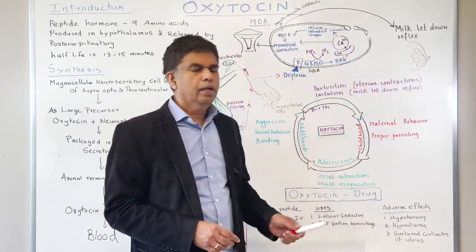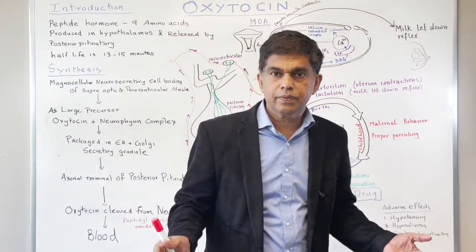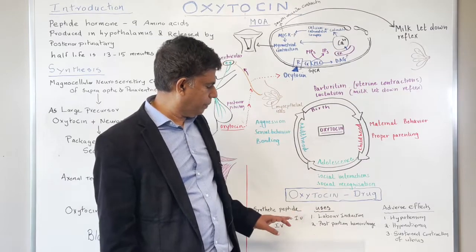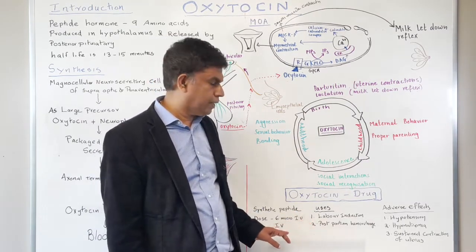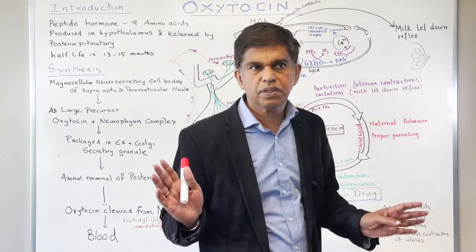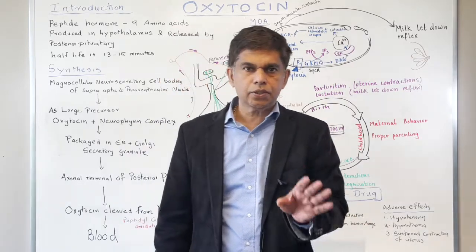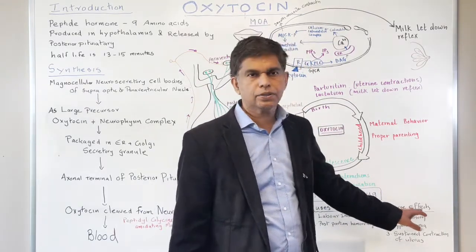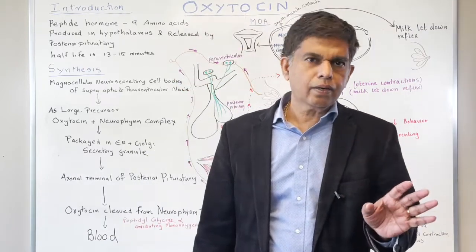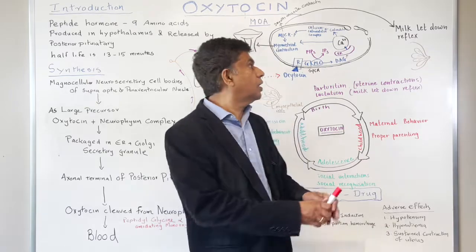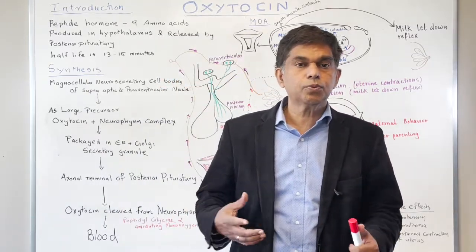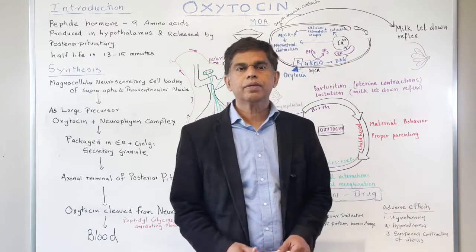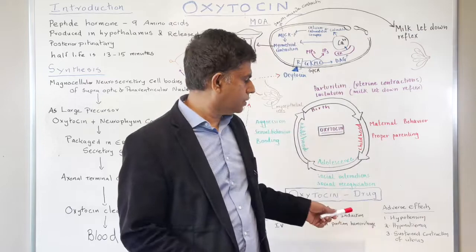We also use oxytocin as a drug in delivery. There is a synthetic oxytocin — a synthetic peptide — with a dose of 6 micro international units and a half-life of 13 to 15 minutes. Uses include labor induction and postpartum hemorrhage. Adverse effects include hypotension — because sustained use causes smooth muscle relaxation, making the patient hypotensive — and hyponatremia, because it acts on ADH receptors.